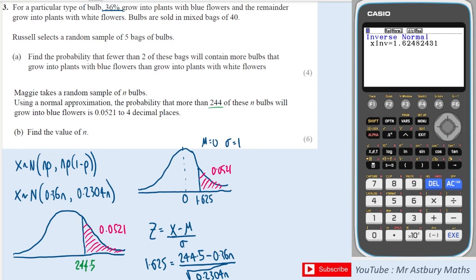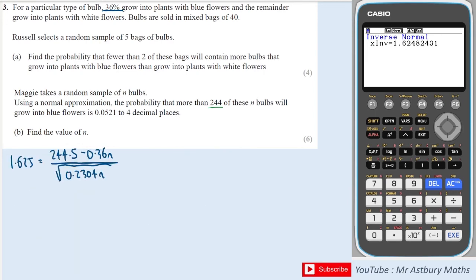To solve this equation I'm going to need a little bit more space. So I am going to multiply up by that denominator which will give me root 0.2304 times by root n. So what I'll do is I'll split that denominator up into root 0.2304 times root n and that's equal to 244.5 minus 0.36n.